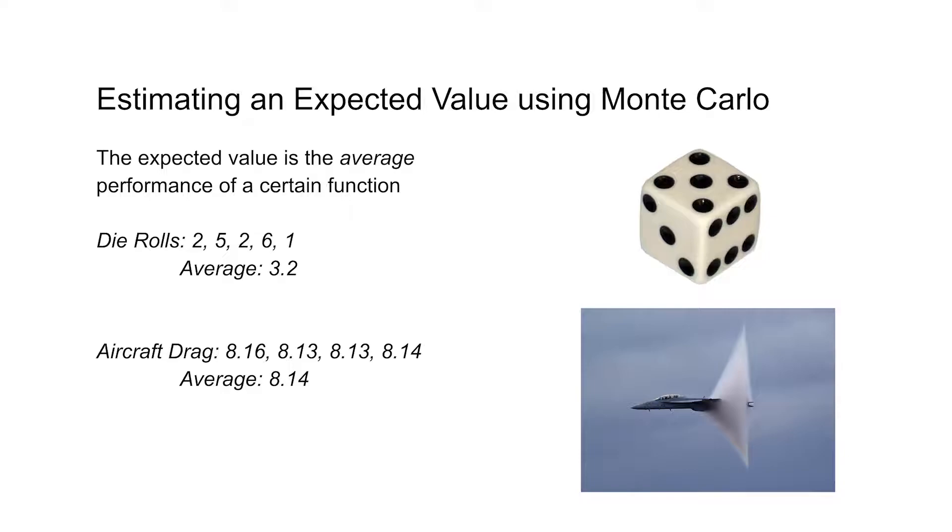And that's because the die numbers vary all the way from 1 to 6, while with this airplane performance example, they're much closer to each other, 8.16, 8.14. So a key concept of Monte Carlo is that the more your simulations can vary, the larger error you can have in how bad you are at predicting the expected value.